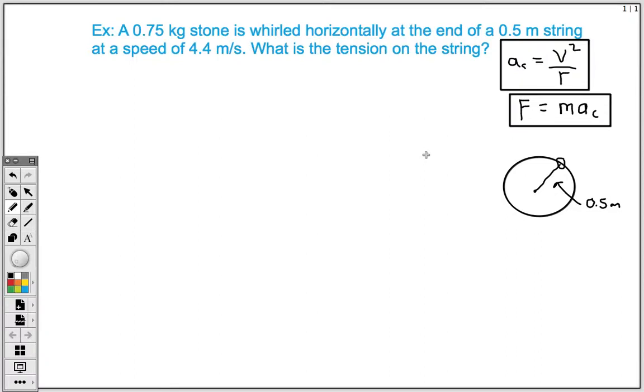So to get us started off, the first thing that I always like to do with my physics problems is to take a look at what we know and what we don't know in terms of our values in the problem. So we're going to take a look at what we already know from the problem. So as we read through, here we know that we have a 0.75 kilogram stone.